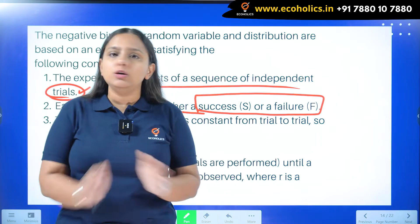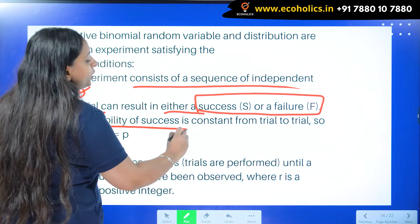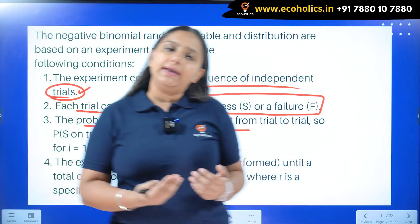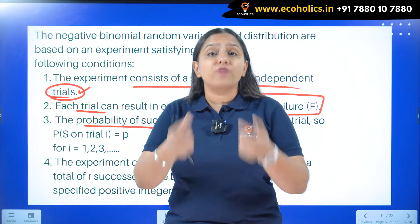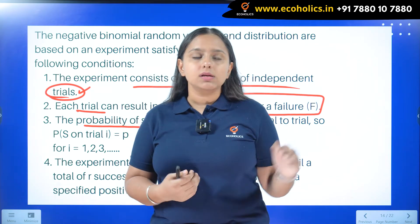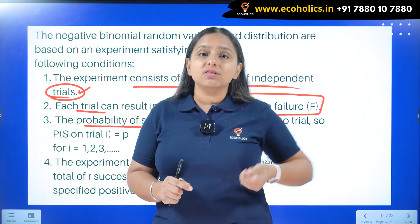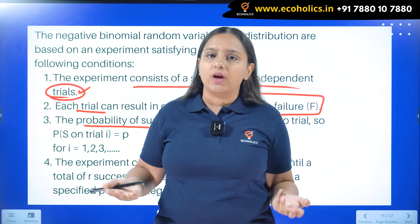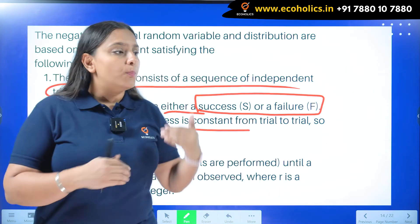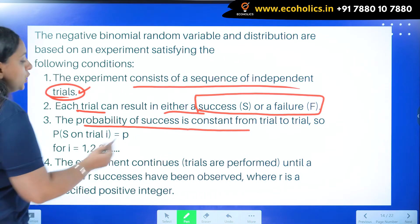Just like in binomial, we want either success or failure, nothing in between. After that, the probability of success must be constant from trial to trial — if it is changing every time, you cannot call it negative binomial. When tossing a coin five times, if getting a head is my success, the probability should stay at 0.5 throughout. It shouldn't change to 0.8 then 0.1. The coin should remain the same, whether unbiased or biased, so that probability of success stays constant.